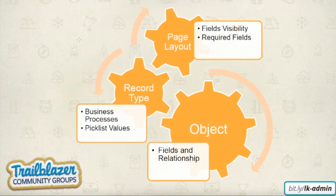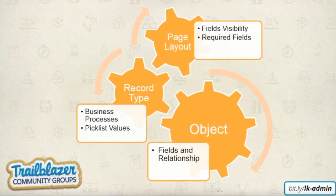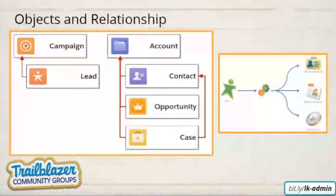One profile or one user can access multiple record types, and each record type can be associated with one or multiple page layouts. The combination of record type and profile gives you the right page layout — you assign a page layout to one profile and one record type. On the custom objects side: on a standard object you can also add custom fields. A custom object is a new table with new fields. You can connect standard objects to custom objects. From a data model perspective, it's important to understand one-to-many, many-to-many, master-detail, and lookup relationships.